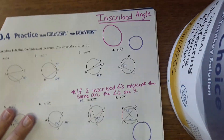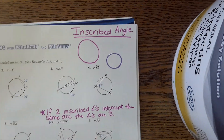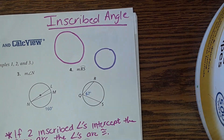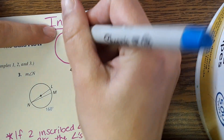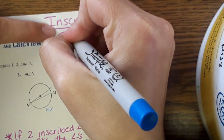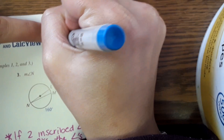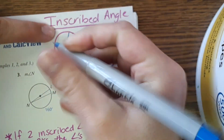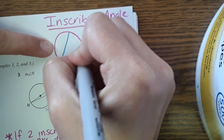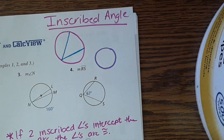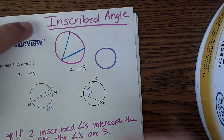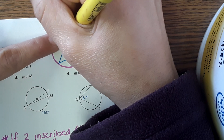Right at the top — inscribed angle. This was on a vocabulary thing at the beginning of the chapter. An inscribed angle goes all the way across the circle, like this — from here to here. And the other word you need to know is intercepted arc, which is this part right here.